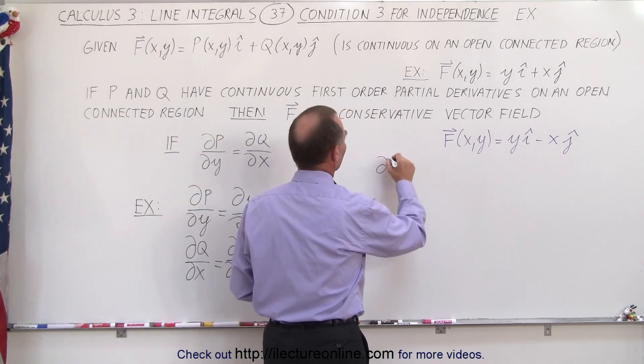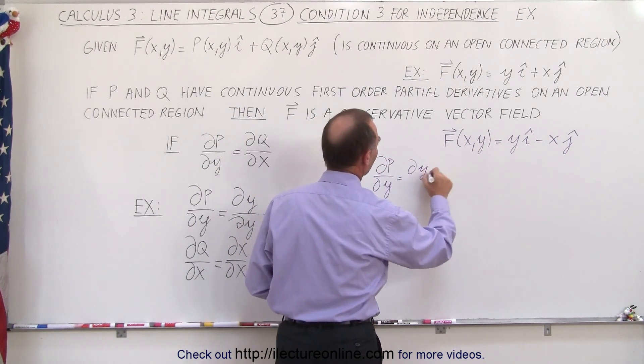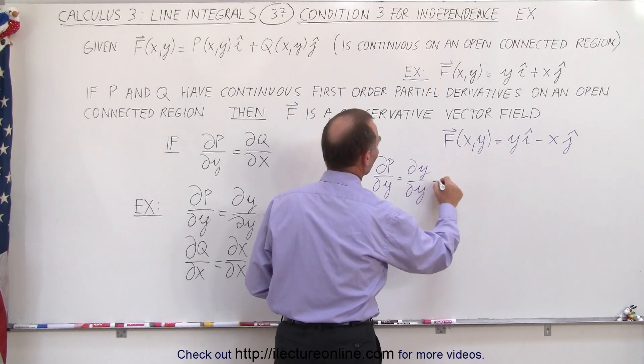So the partial of P with respect to Y, in this case, is going to be the partial of Y with respect to Y, which is equal to 1.